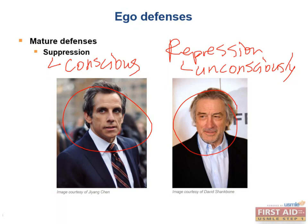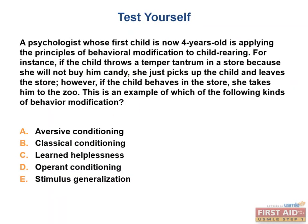That was definitely a lot of information. At some point, you should plan to come back to these ego defenses and review. Now a practice question: A psychologist with a four-year-old child is applying behavioral modification to child rearing. If the child throws a temper tantrum in a store, she picks up the child and leaves. But if the child behaves, she takes him to the zoo. This is an example of which kind of behavior modification? The correct answer is operant conditioning.